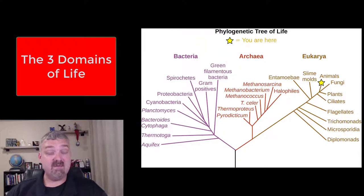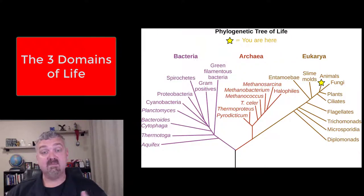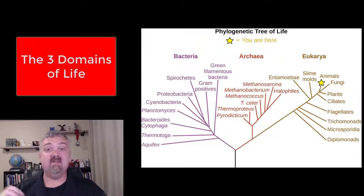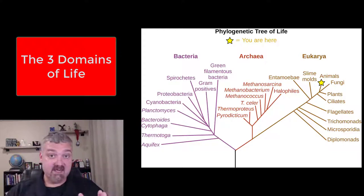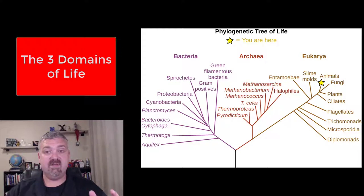So obviously most of the time you focus on the eukarya, the eukaryotes, because that's where humans are, as you can see from the yellow star there. But let's take a real quick walk through each of these. So obviously the bacteria are going to be what we focus on in microbiology, so we won't go through all the different types.